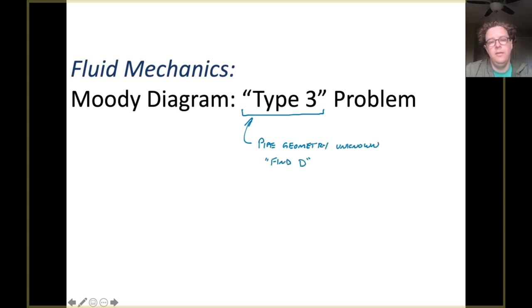This means that the pipe geometry is unknown, and so this will often take the form of finding the pipe diameter or radius. And the key thing that we're going to remember about a type 3 problem is this puts us into an iterative mode. So we're going to have to guess and check friction factors.